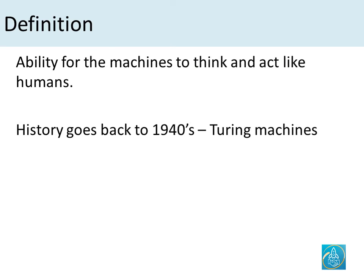Artificial intelligence in its most simplistic definition is the ability for machines to think and act like humans — essentially to be able to mimic human behavior.